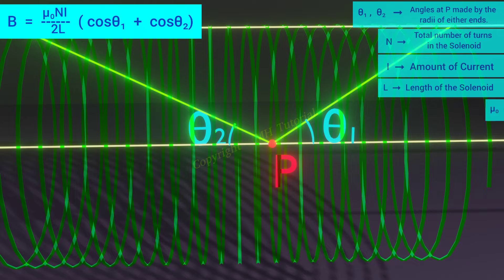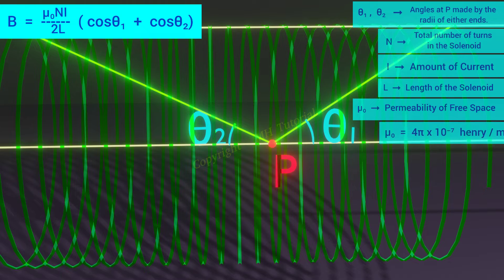And mu0 is the permeability of the free space. Its accepted value is 4 pi into 10 to the power minus 7 henry per meter.